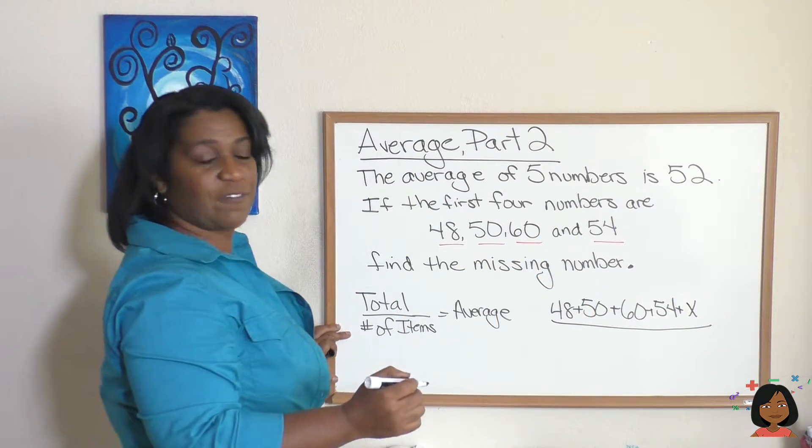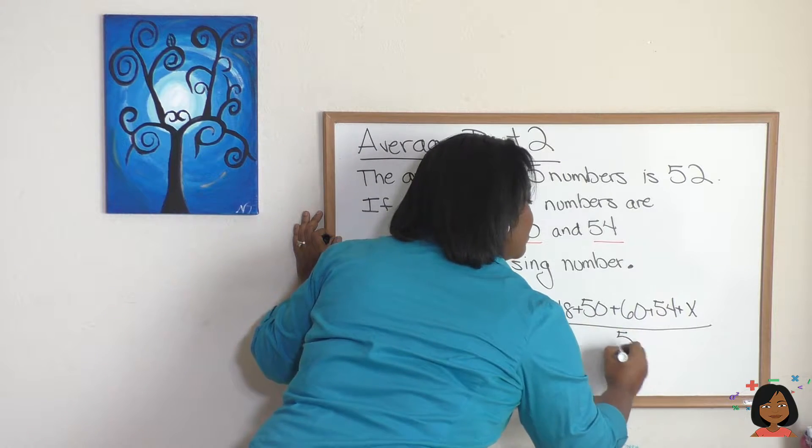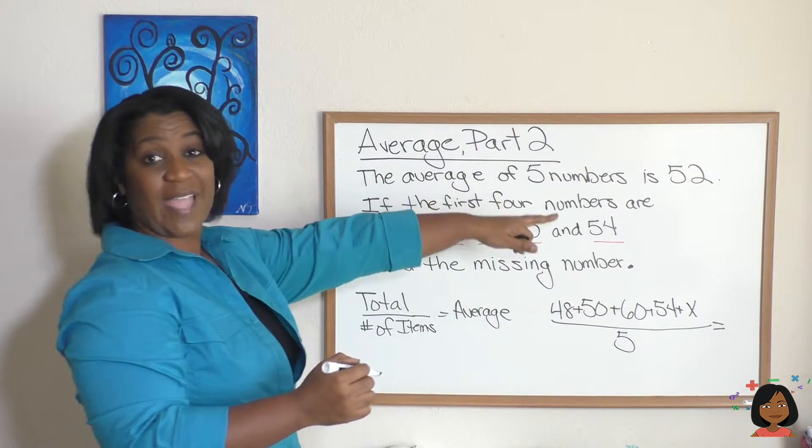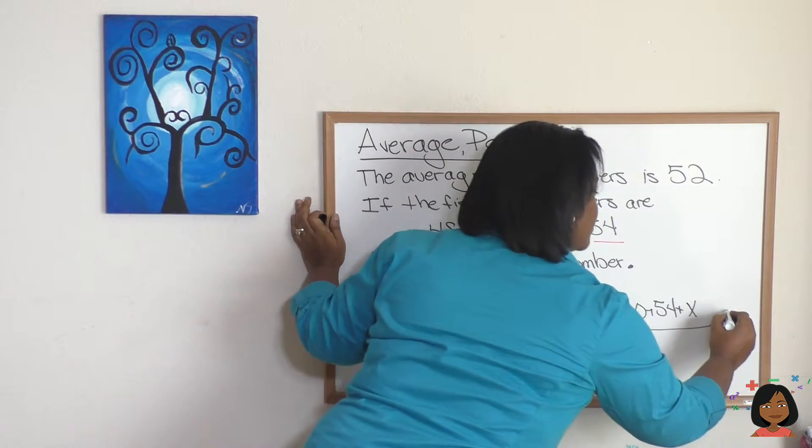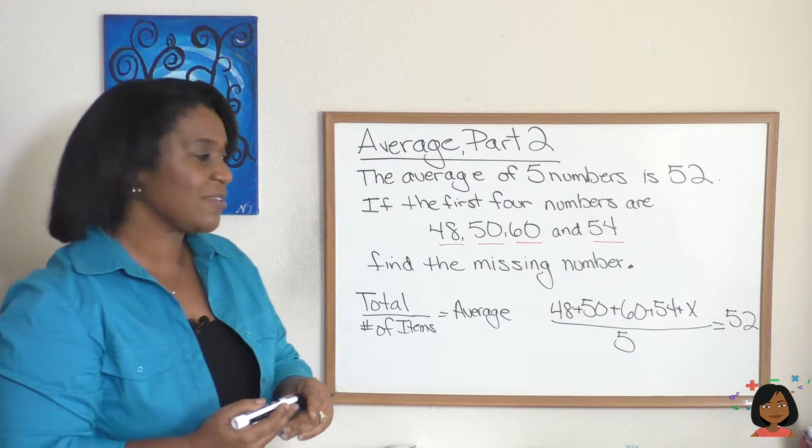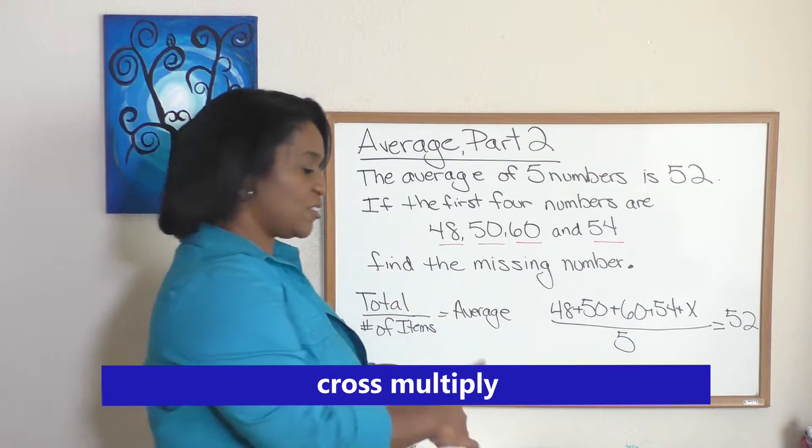Over the number of items, well we have five numbers, so we can put five on the bottom. Equals, we're squeezing it in, the average, the average is 52, put it over here. So how would we do this? Well, let's go ahead and cross multiply.